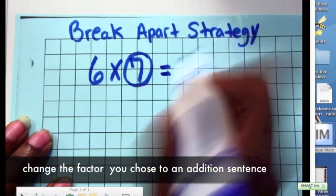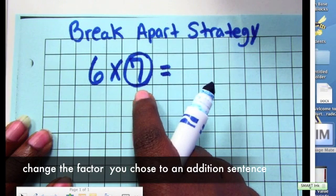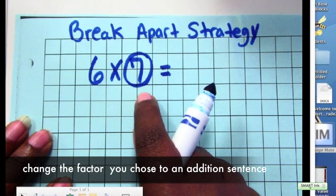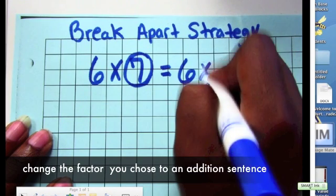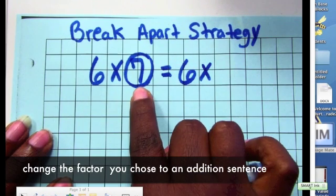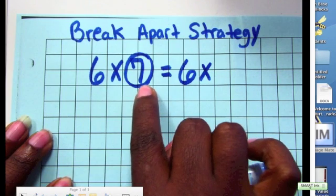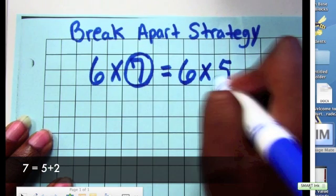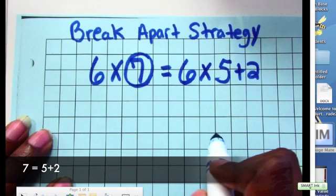So when I break apart the seven, I am going to break apart the seven using addition. I am going to multiply the six times an addition problem that is equal to seven. Five plus two is equal to seven.